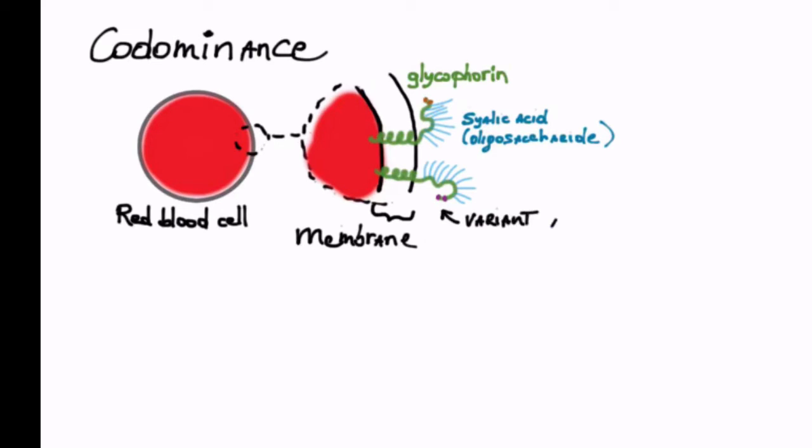The very end of the amino terminus has antigenic properties, that is, it is recognized by the immune system and comes in two types, M and N.